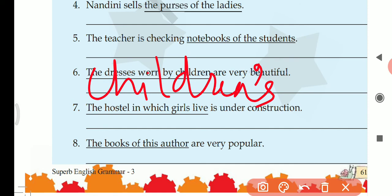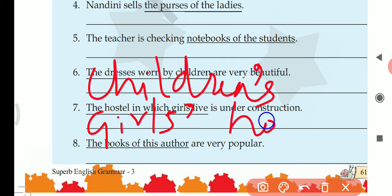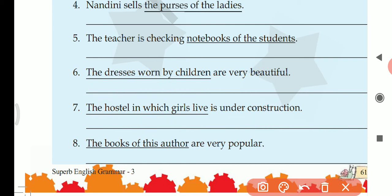Next: the hostel in which girls live is under construction. Girls is plural and it is ending in S, so apostrophe will be given after S — girls' hostel is under construction.